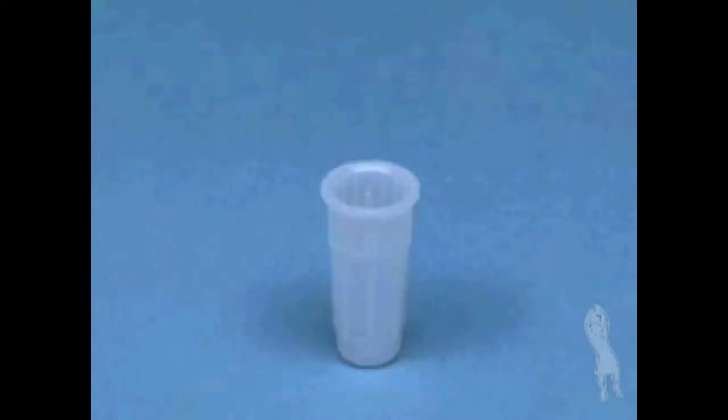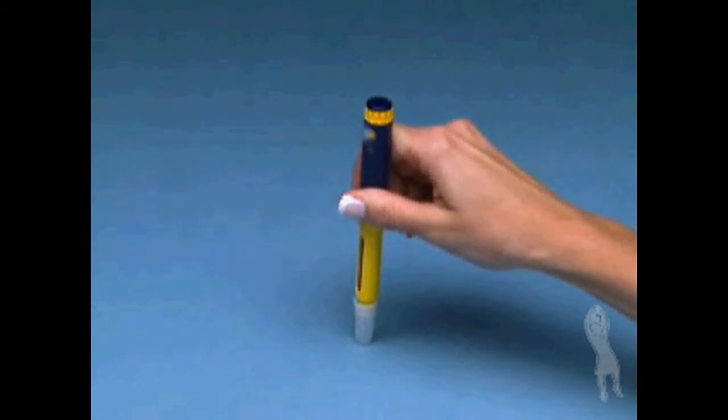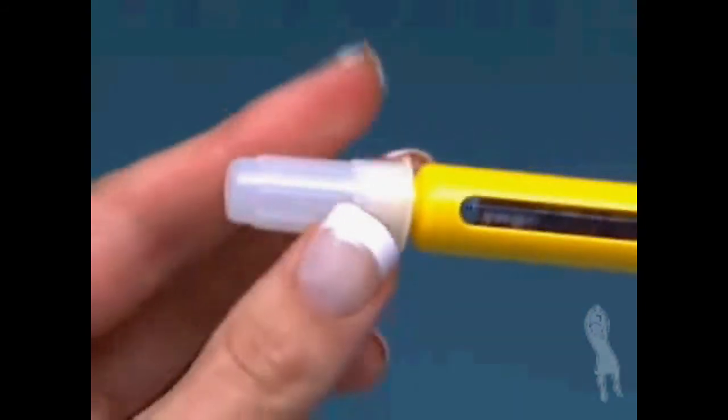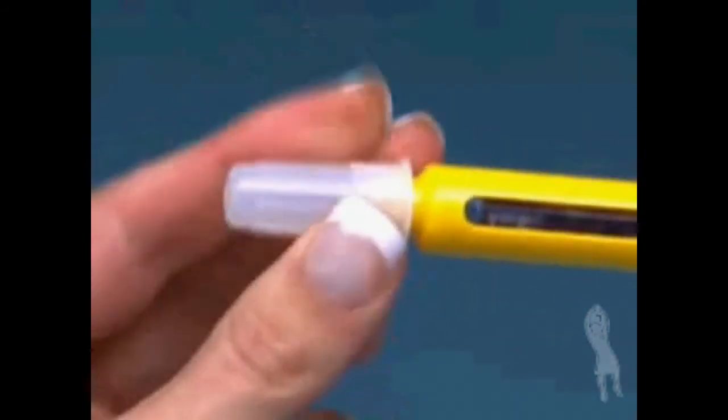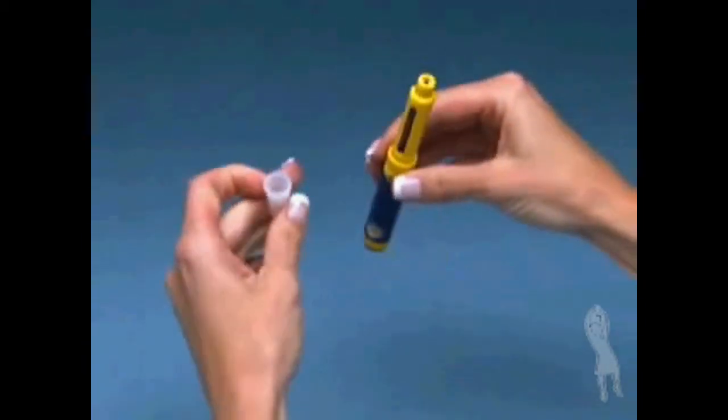Place the outer needle shield on a flat table surface with the opening pointing upward. Without holding onto the outer needle shield, carefully insert the needle attached to the Follistim pen into the opening of the outer needle shield and push down firmly. The outer needle shield should now be attached to the cartridge holder and cover the needle. Grip the outer needle shield and use it to unscrew the needle from the cartridge holder.